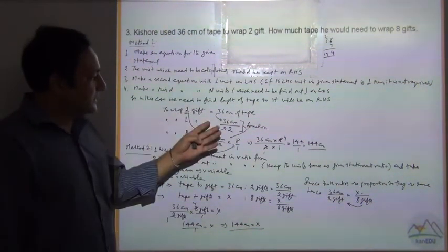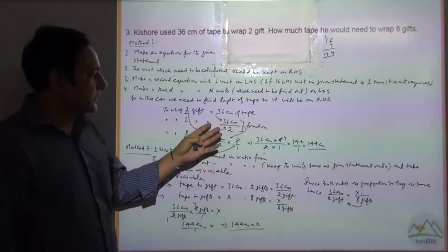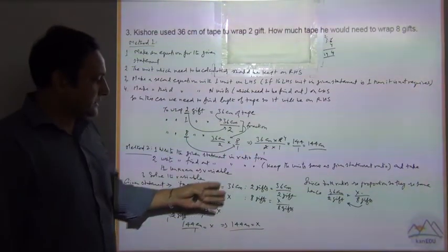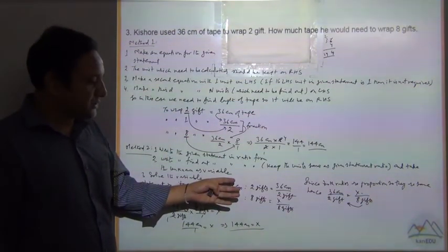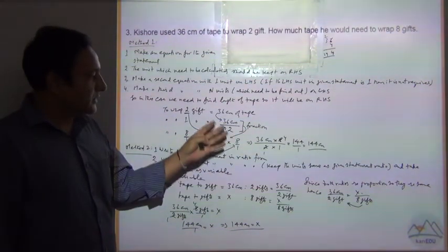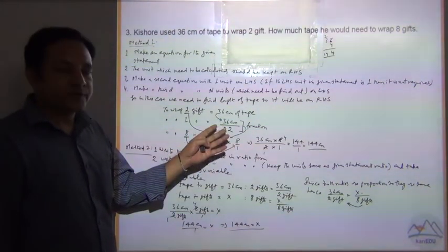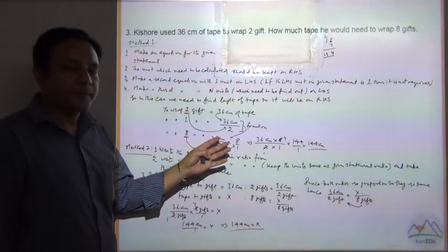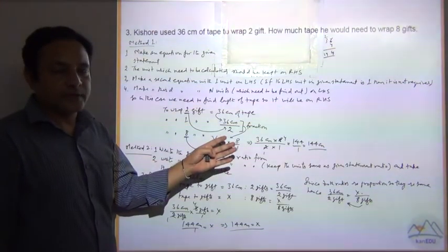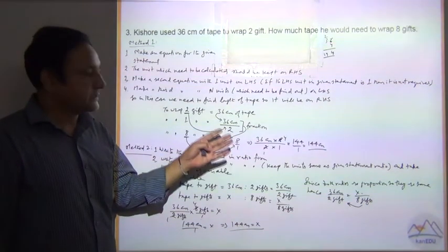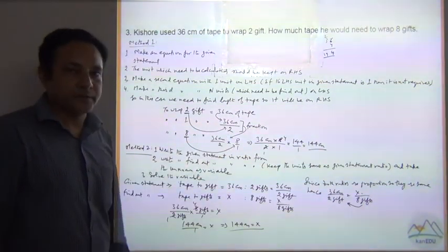So we have two methods to solve this question. Method 1 is the unitary method, and Method 2 is the ratio proportion method.